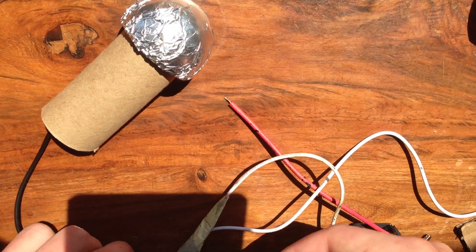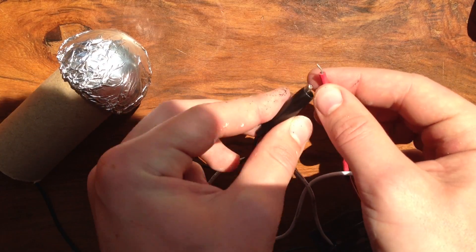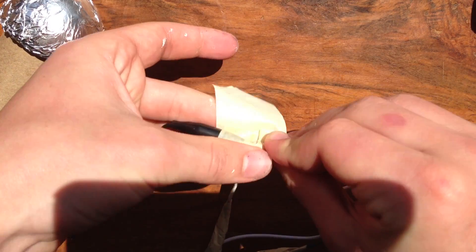Once you've finished insulating everything, take your other alligator clip leading off your toilet paper tube and connect it to the red wire. And make sure to insulate this connection as well.